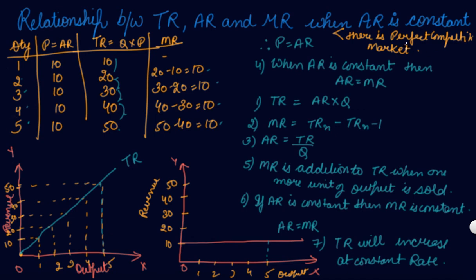These are the two forms of this question. I will explain what a perfect competition market is and how AR is equal to MR in it, but they can mold the question this way. You will need to make this diagram, this table and explain the relationship. I hope you have completely understood this topic. Please download our Scholars Learning App and enjoy the learning experience with us. Thank you.